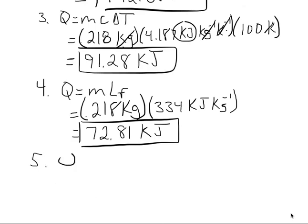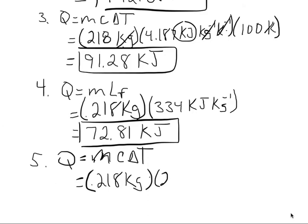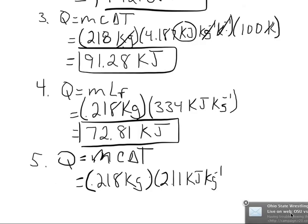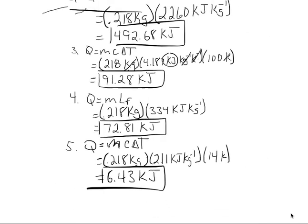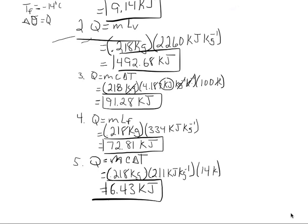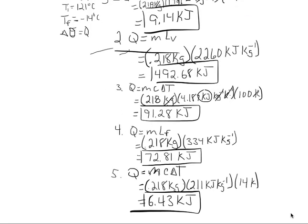The last step is to get that ice down to negative 14 degrees — a temperature change, so q = mcΔT. It's 0.218 kilograms times the specific heat of ice, which is 2.11 kilojoules per kilogram·kelvin. Our change in temperature is from 0 to negative 14, so that's 14 kelvin. Calculating it out, we get 6.43 kilojoules. We've now found the specific energies associated with each of the five components.